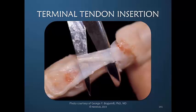Distal glide is fairly easy to regain because you have the very powerful flexor digitorum profundus flexing the DIP joint to create distal glide of the terminal tendon insertion. But proximal glide, as we know, is naturally a much weaker motion and it is also a very small amount of glide, so biomechanically it is very difficult to regain.